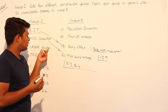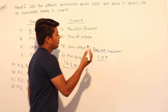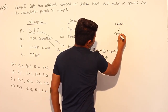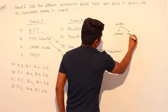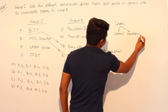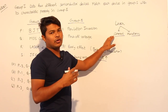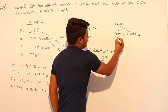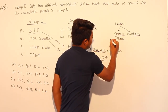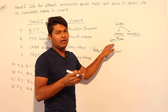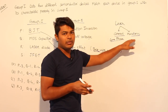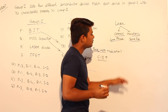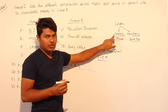Next, laser diode. In a laser diode, there are two important characteristics: one is coherent, and another is monotonic. We know that a laser emits photons. Whenever all the photons have the same phase, they are said to be in coherence. Whenever all the photons have the same frequency, they are said to be monotonic — monotonic means same frequency. So laser has two important properties: coherence and monotonic.